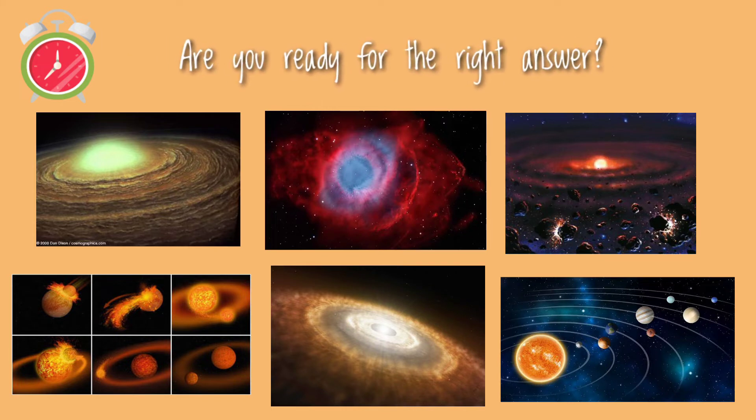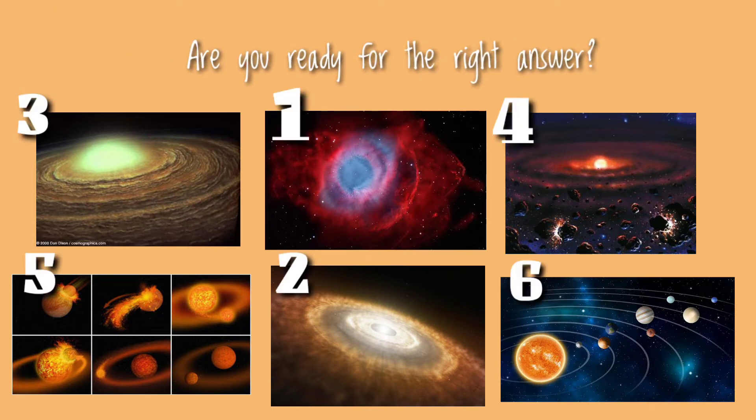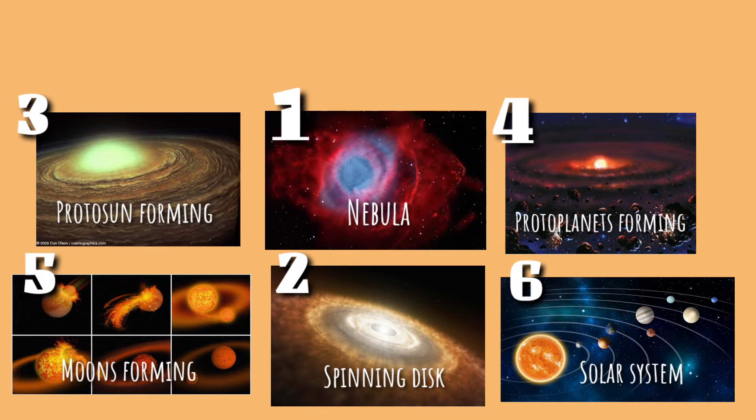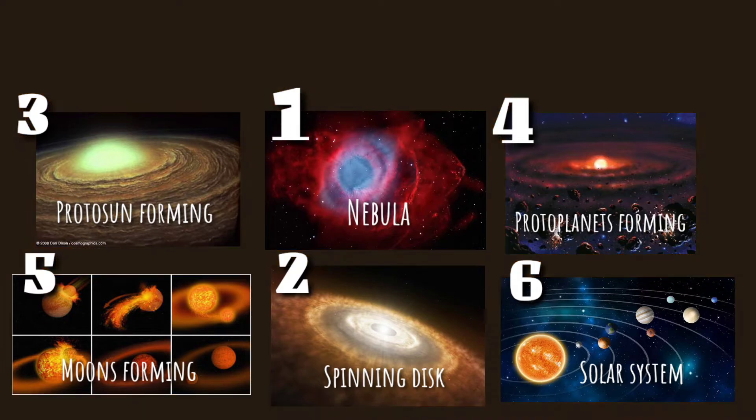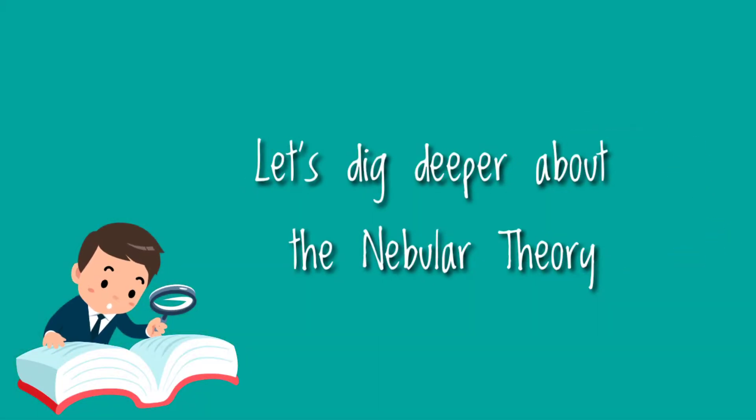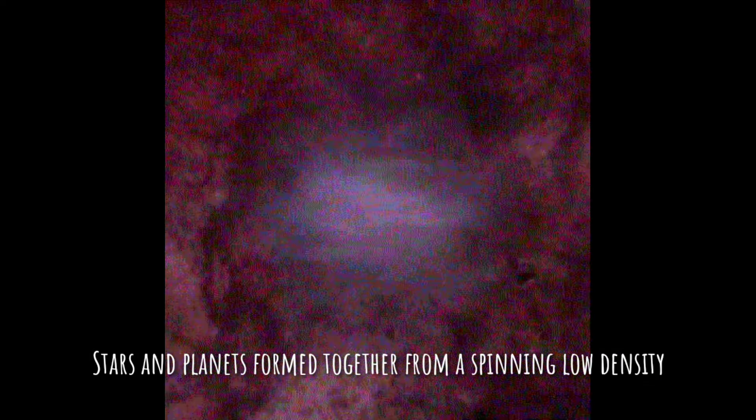Are you ready for the right answer? According to nebular theory, there are six important events that happened from the beginning to the formation of our solar system. Let's dig deeper about the nebular theory. According to nebular theory, stars and planets form together from spinning low-density...